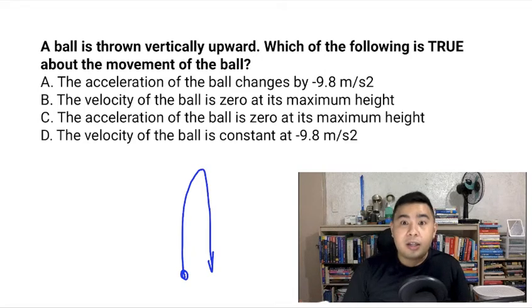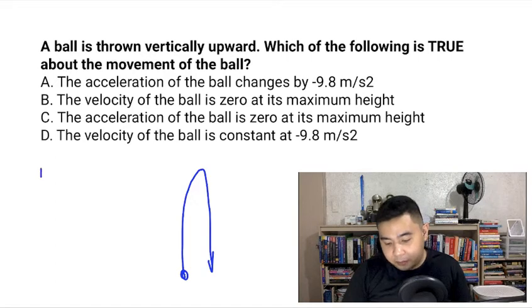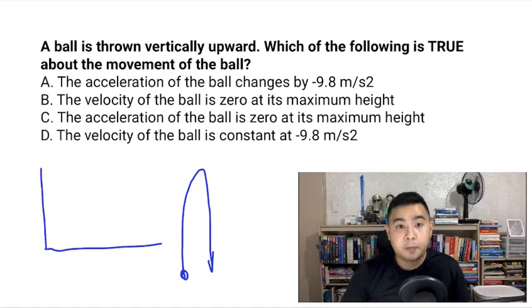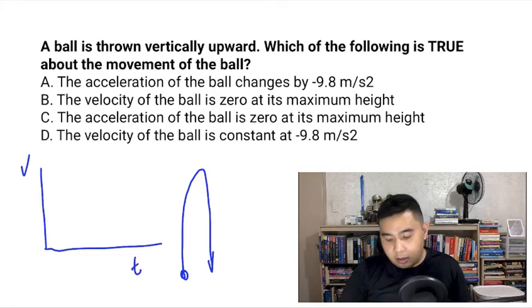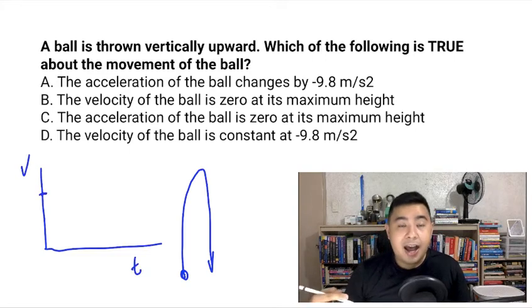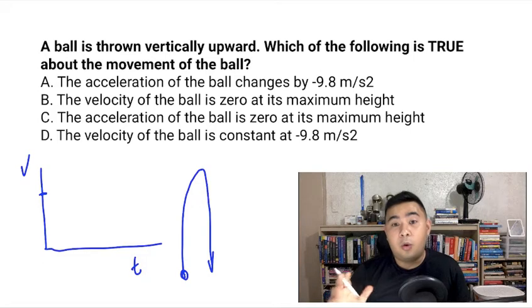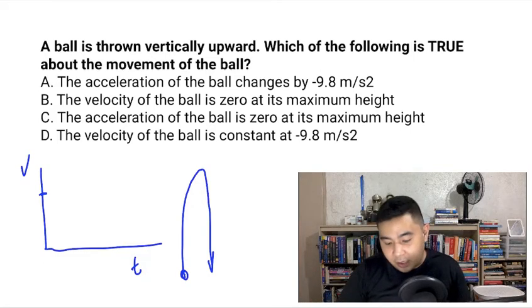Let's take a look at the velocity time graph of this particular ball. So here's a velocity time graph. Let's say that the ball has an initial velocity of 1 meter per second. That's pretty fast, but let's use it for illustration purposes. So it starts with an initial velocity of 1 meter per second.